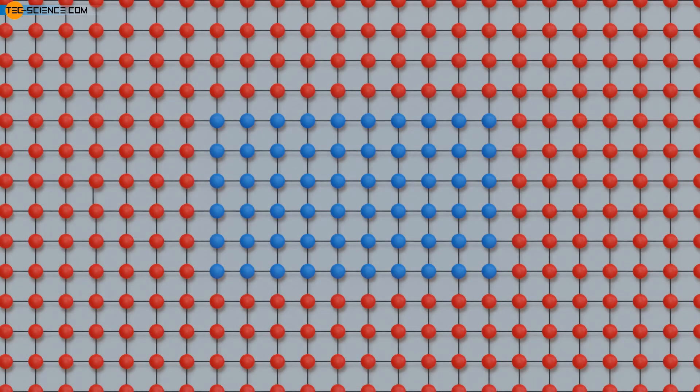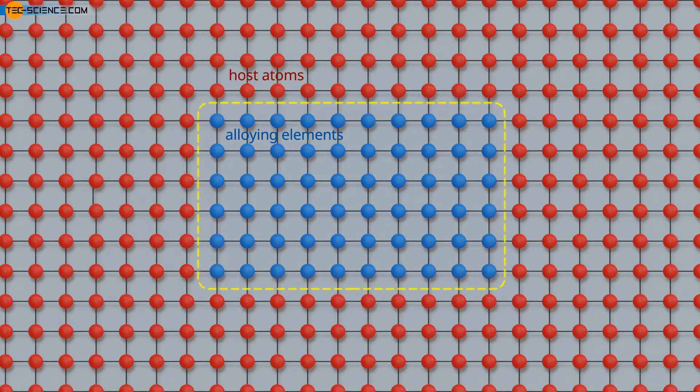In addition to grain boundaries, phase boundaries represent another type of planar defect. This can be, for example, an accumulation of alloying elements in the metal's host lattice. A phase boundary thus spatially delimits two different chemical structures from each other.